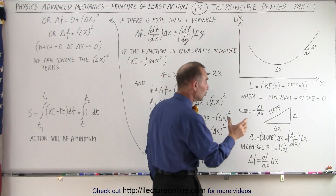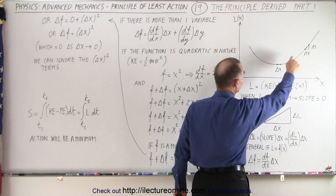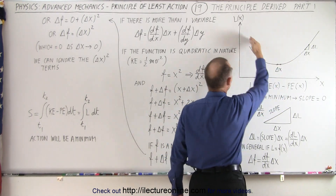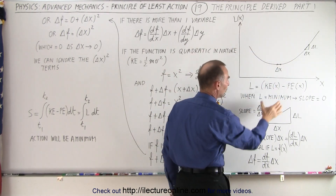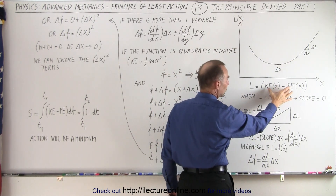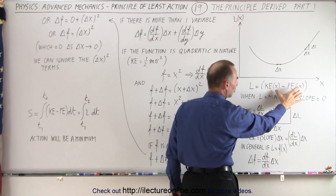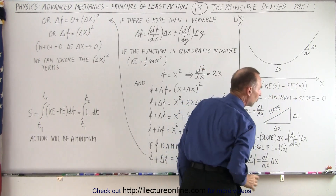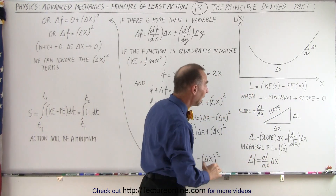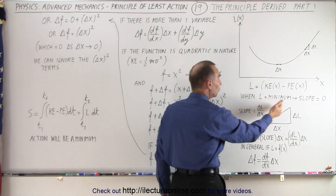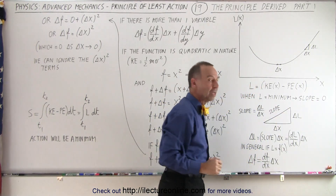So what we're going to do here is represent this general function as L, the Lagrangian, which is the difference between the kinetic energy and the potential energy, written as a function of x. When L is a minimum, the slope will be equal to zero.